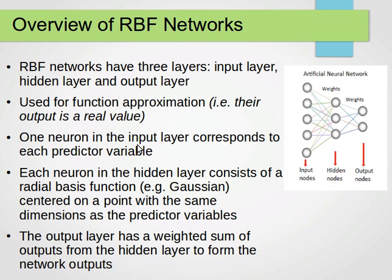In the input layer, every neuron or unit corresponds to one predictive variable in our data. Each neuron in the hidden layer consists of a radial basis function — for example, a Gaussian function. That transfer function is centered on a point with the same dimensions as the predictive variables. So if we have 10 features, each Gaussian function will be centered on a 10-dimensional point with components x1, x2, x3 ... x10.